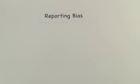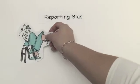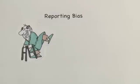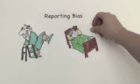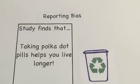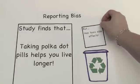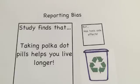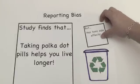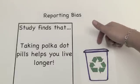Another example is reporting bias. Let's say the polka dot pill helps people live longer, but it is associated with terrible toxicity. If authors choose to report the survival results but not the toxicity results, then this will give readers a biased view of how effective the polka dot pill really is.